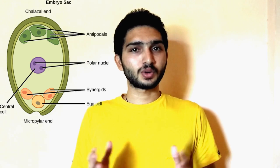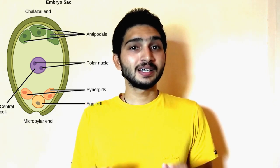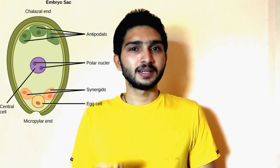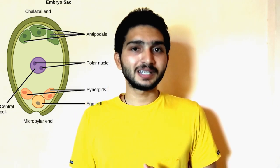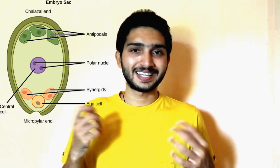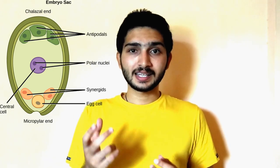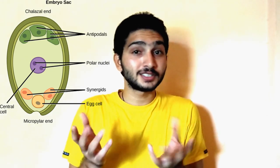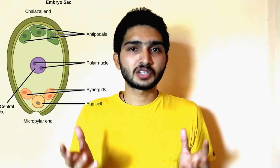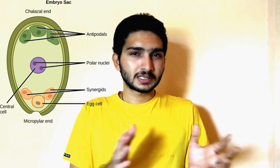The egg apparatus is considered one of the biggest cells in the embryo sac because this cell is covered by a somewhat thin layer of cells. It has synergids placed adjacent to it.